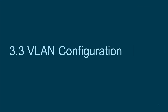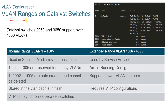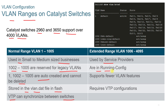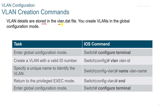3.3 VLAN Configuration. The VLAN ranges on Catalyst switches: Catalyst 2960 and 3650 switches support over 4000 VLANs and are used in small to medium-sized businesses. The extended VLAN range is used by service providers. The normal range 1002 to 1005 is reserved for legacy VLANs — these are auto-created and cannot be deleted. VLANs are stored in the vlan.dat file in flash memory, and VTP can synchronize them between switches. On the extended range, they are in the running config file, support fewer VLAN features, and require VTP configuration.